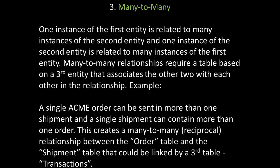The third type of cardinal relationship in a relational database is the many-to-many relationship, where one instance of the first entity is related to many instances of the second entity, and one instance of the second entity is related to many instances of the first. Many-to-many relationships require a table based on a third entity that associates the other two. For example, a single Acme order can be sent in more than one shipment, and a single shipment can contain more than one order, creating a many-to-many relationship between the order table and the shipment table, which could be linked by a transactions table.